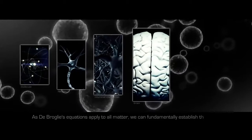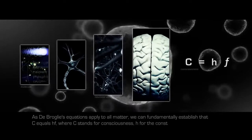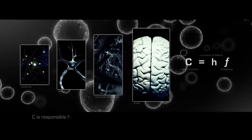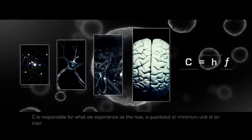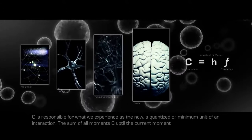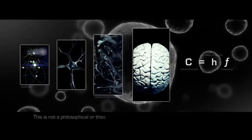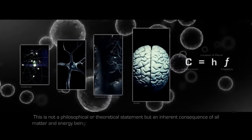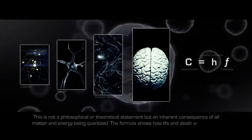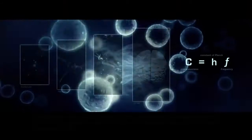As de Broglie's equations apply to all matter, we can fundamentally establish that C equals HF, where C stands for consciousness, H for the constant of Planck, and F for frequency. C is responsible for what we experience as the now, a quantized or minimum unit of an interaction. The sum of all moments C up till the current moment is what shapes our concept of life. This is not a philosophical or theoretical statement, but an inherent consequence of all matter and energy being quantized. The formula shows how life and death are abstract constructions of C.